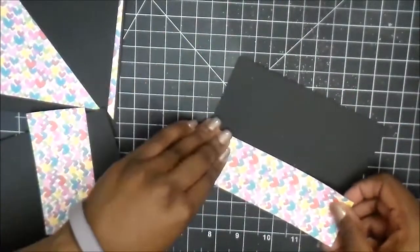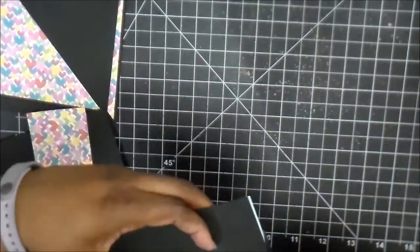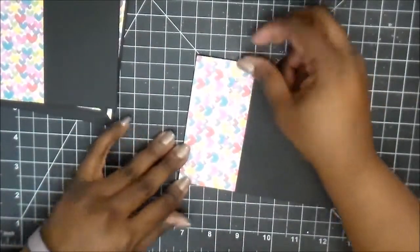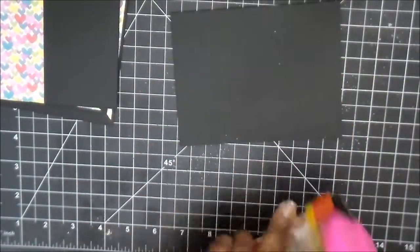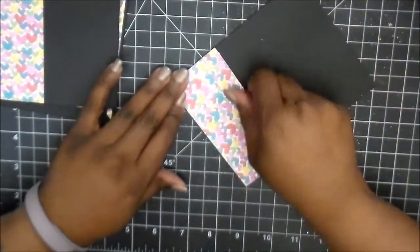And all I'm using is my ATG gun to attach each piece. And if you find that any of your paper is pulling up, you could always use a combination of ATG tape and wet glue. It's up to you. But for me, and for what we're doing here today, the ATG gun is fine.